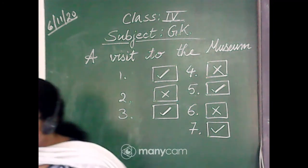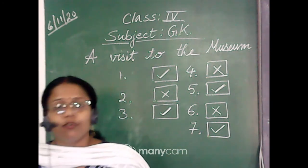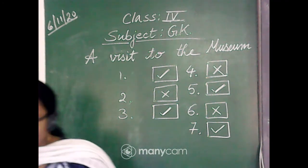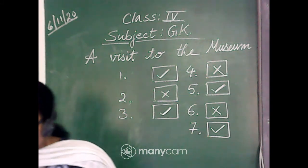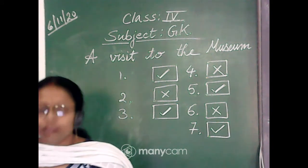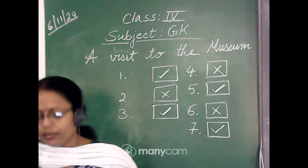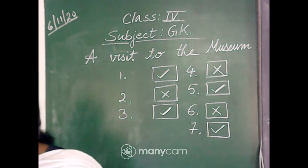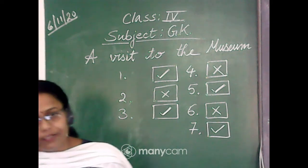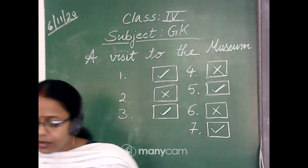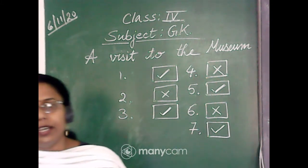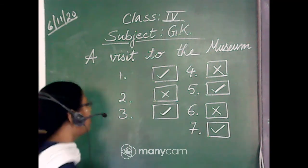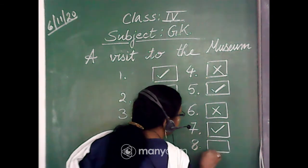The eighth statement is: photography is allowed in the museum. Going back to the reception counter chart, we can see that a still camera costs rupees one hundred along with the entry fee, and a video camera costs rupees two hundred fifty along with the entry fee. Since there is a pricing structure for cameras, photography is indeed allowed. So statement eight is correct — tick.